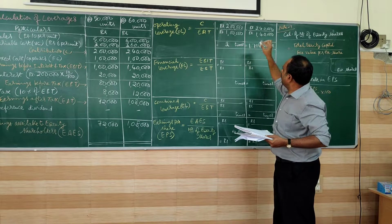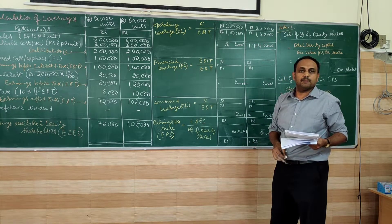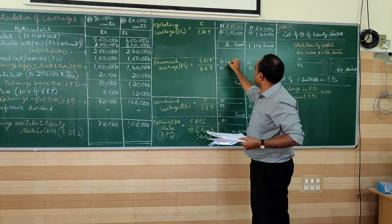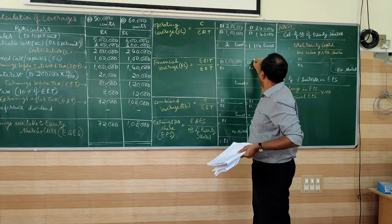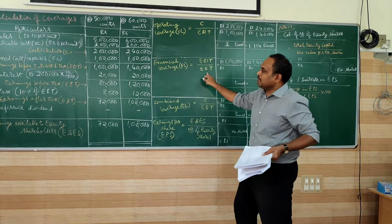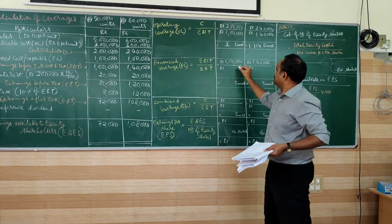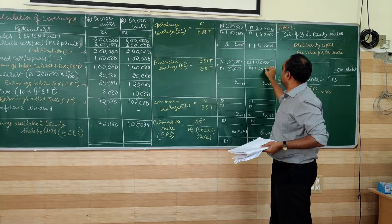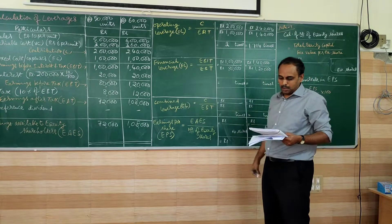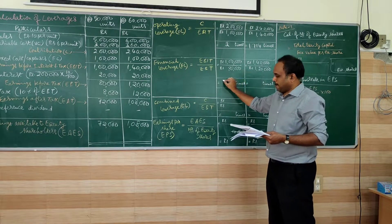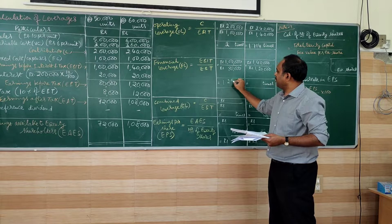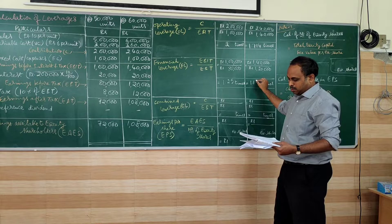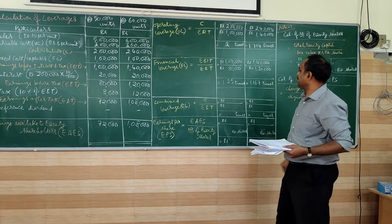Coming to the financial leverage. Again EBIT: 1 lakh and 1 lakh 40. EBT: first situation 80,000, second situation 1 lakh 20,000. So 1 lakh divided by 80 equals 1.25 times. 1 lakh 40 by 1 lakh 20 equals 1.167 times.